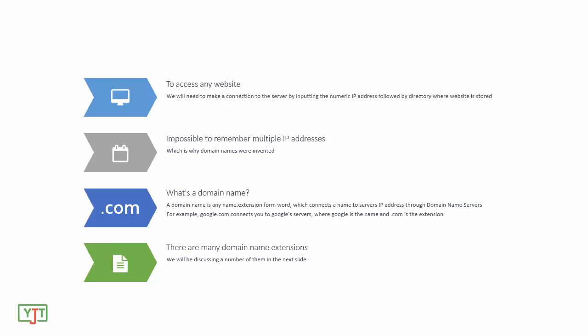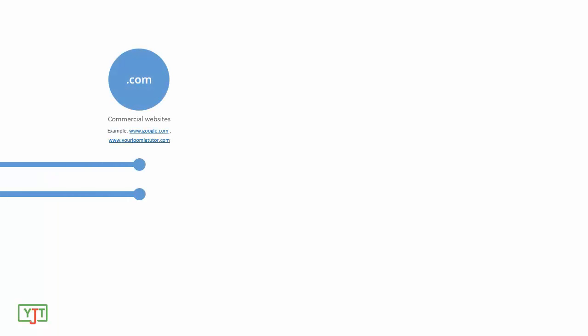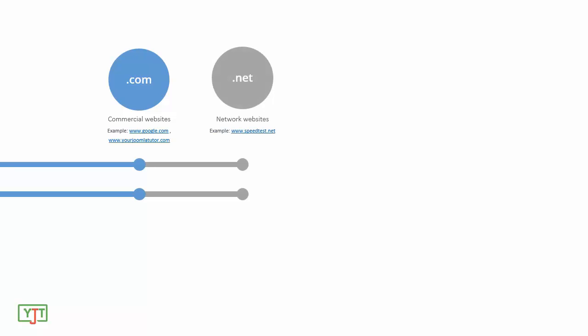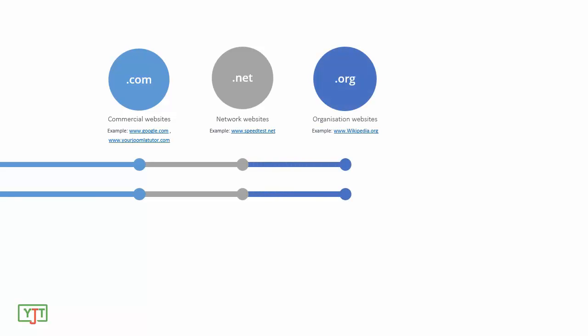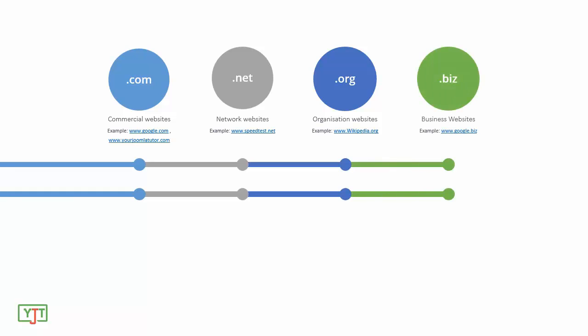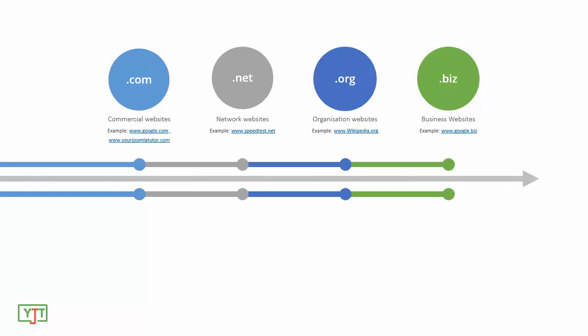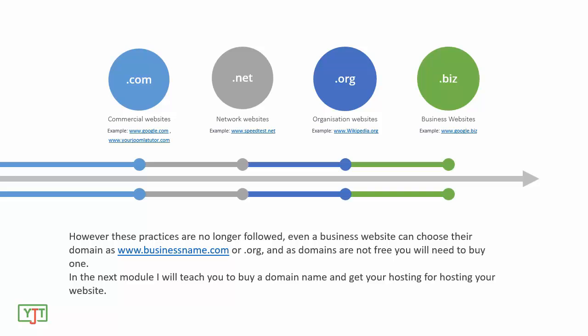There are many domain name extensions, which we will discuss in the next slide. The .com domain name extension was generally made for commercial websites like google.com or yourjoomlatutor.com. The .net extension was made for network websites, for example speedtest.net. The .org domain extension was made for organization websites like wikipedia.org, whereas the .biz domain name extension was made for business websites. However, these practices are no longer strictly followed — even a business website can choose a domain like www.businessname.com or .org.